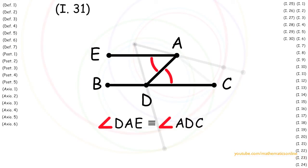Next with Postulate 2, we extend line EA to point F. Now as you can see we have two straight lines intersected by a third line making the alternate interior angles congruent.